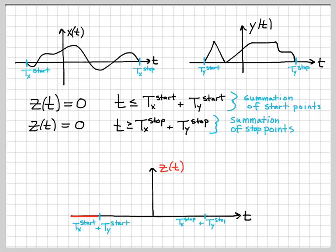So on the time axis, if this is the time t sub x stop plus t sub y stop, I now know that z of t will be 0 for all times greater than or equal to that.